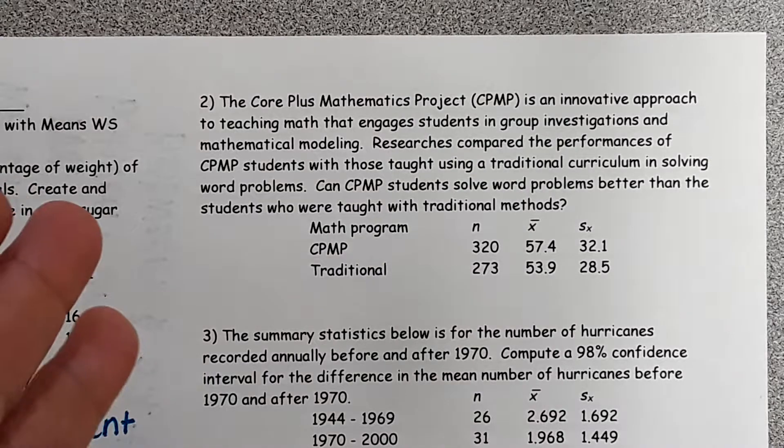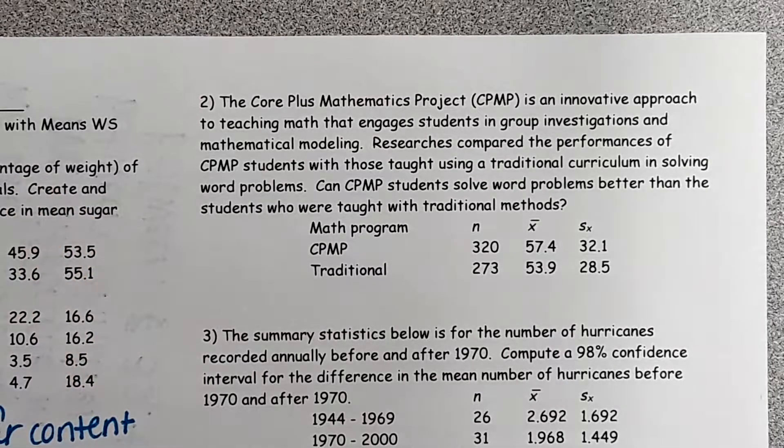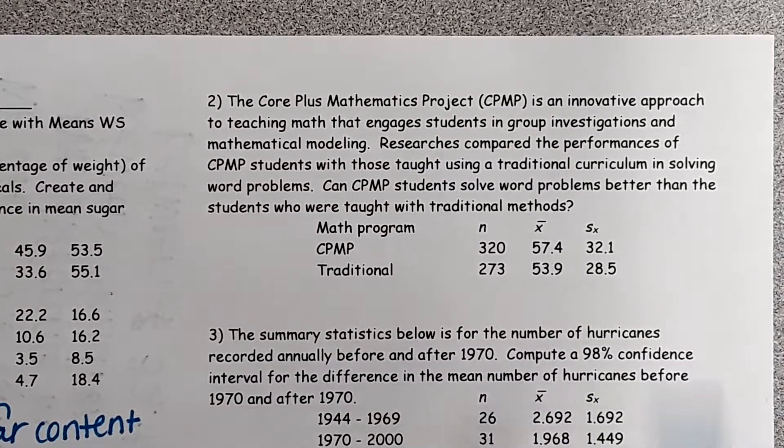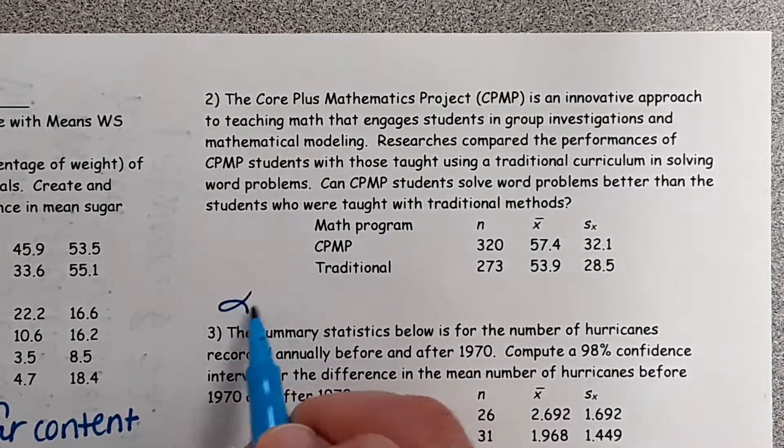But because they're asking you can they solve word problems better, that is a significance test. So what alpha level do we want to use? They don't give us one, what do we want to use? Yep, we're going to use 0.05.